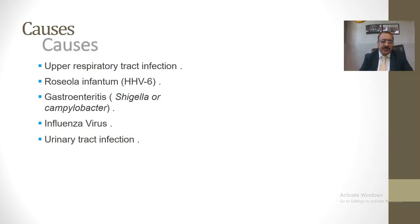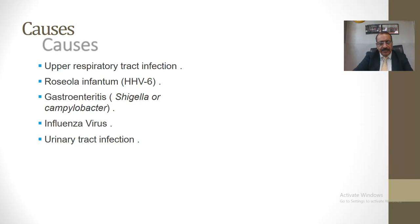We have to establish the cause of fever. The cause is generally upper respiratory tract infection or infections caused by viruses, particularly human herpesvirus 6, which causes Roseola infantum. Similarly, infections caused by Shigella and Campylobacter usually manifest as gastroenteritis. Then influenza or the common cold, and urinary tract infections, which are fairly common in the pediatric population. These are the common causes which lead to fever and ultimately to convulsions.